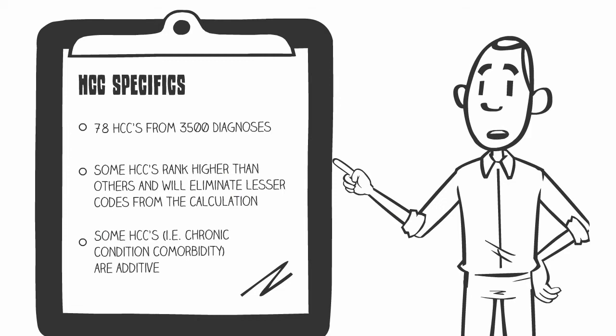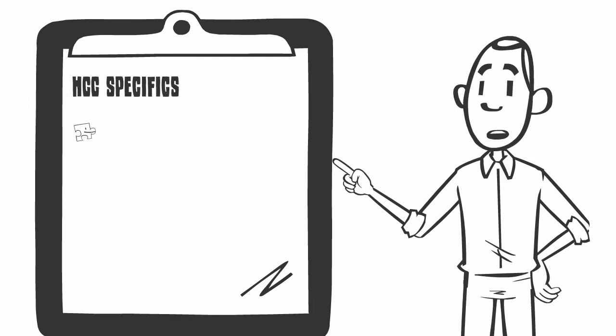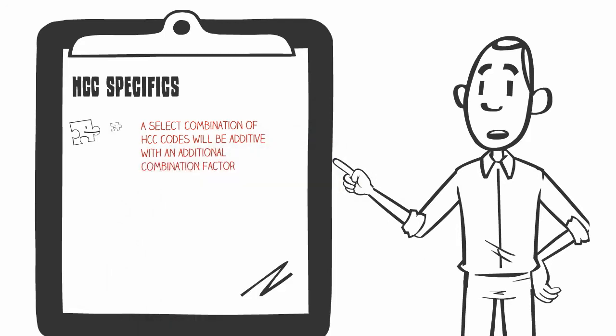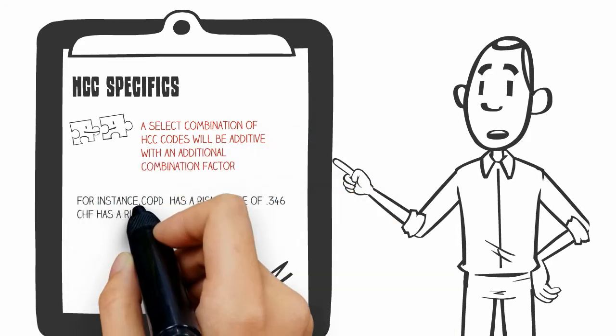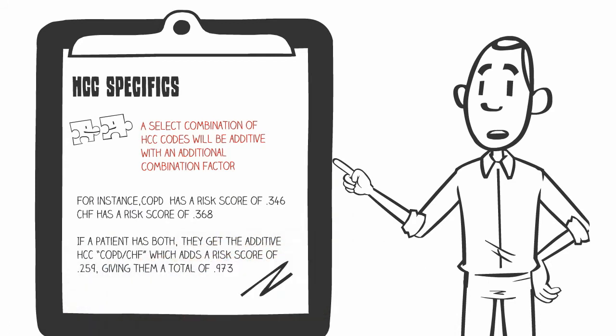Some HCCs are additive. These special HCCs add an additional risk score. For instance, COPD has a risk score of 0.346, and CHF has a risk score of 0.368. If a patient has both, they get the additive HCC, namely called COPD/CHF, that gives them an additional risk score of 0.259 for a total of 0.973 — much higher than the original risk scores.